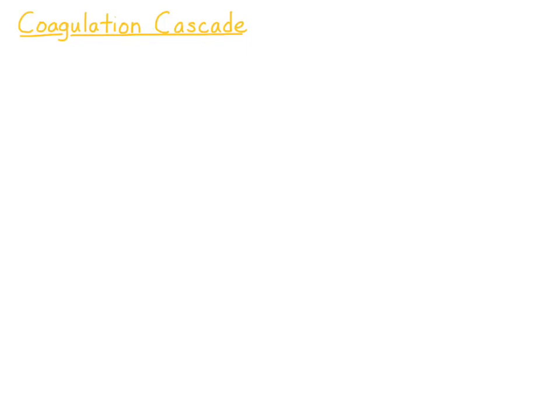This video is going to be on the coagulation cascade. The coagulation cascade consists of lots of coagulation factors which make up secondary hemostasis. The end result of this coagulation cascade is to convert fibrinogen, which is a soluble molecule, into fibrin, which is an insoluble molecule. Most of these coagulation factors are produced by the liver.